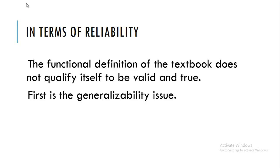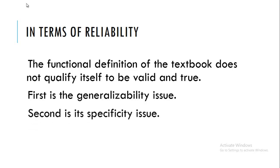The truth can only be established if and only if it refers to outcomes or results. Second is its specificity issue. For a definition to be admissible, certain criteria have to be met. In this case, it is unclear and uncertain.